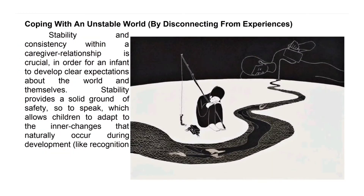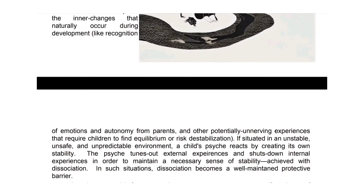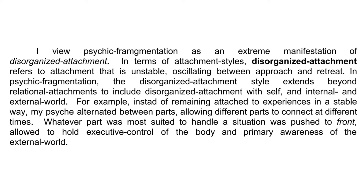Stability and consistency within a caregiver relationship is crucial in order for an infant to develop clear expectations about the world and themselves. Stability provides a solid ground of safety, which allows children to adapt to the inner changes that naturally occur during development, like recognition of emotions and autonomy from parents, and other potentially unnerving experiences that require children to find equilibrium or risk destabilization. If situated in an unstable, unsafe, and unpredictable environment, a child's psyche reacts by creating its own stability. The psyche tunes out external experiences and shuts down internal experiences in order to maintain a necessary sense of stability, achieved with dissociation. In such situations, dissociation becomes a well-maintained protective barrier. I view psychic fragmentation as an extreme manifestation of disorganized attachment.